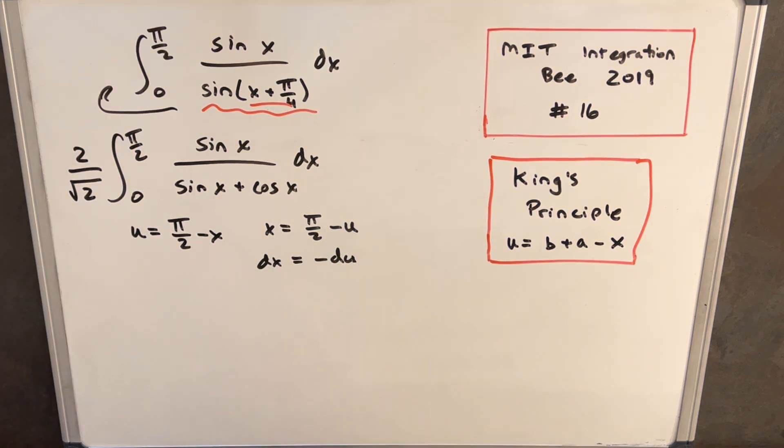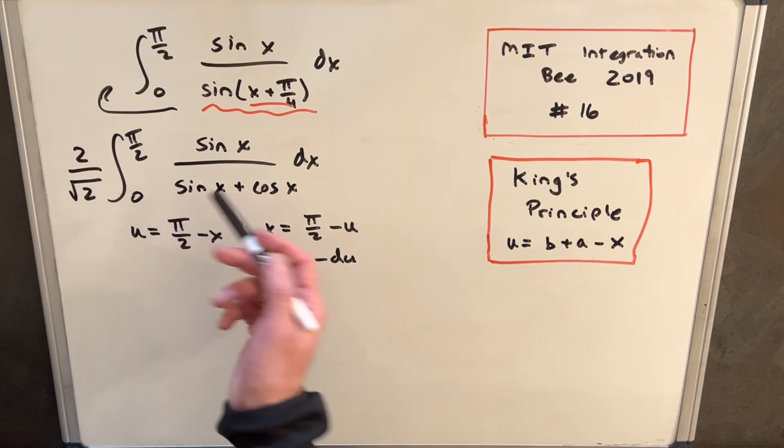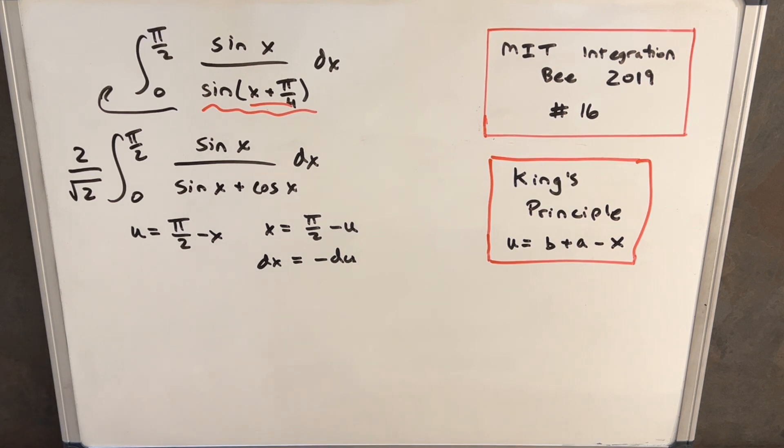So of course everything has to be just right for this really to work out nicely, where pi over 2 minus x is actually the complementary angle formula for trig functions, so we have a lot of things that we need in place here. So let's make this substitution and see how it works out.